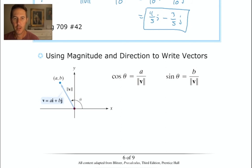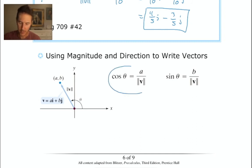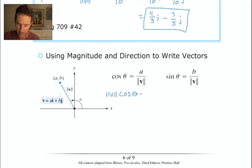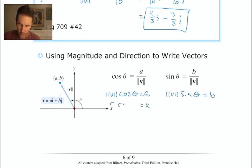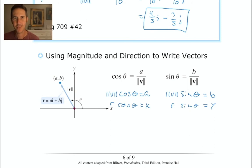Now let's get more specific about direction. If a vector points into the second quadrant, the theta value is larger than π/2. We use the relationships: ||V||·cos θ = a and ||V||·sin θ = b — this is just like x = r·cos θ and y = r·sin θ from polar coordinates. This is not new material — it's the same idea presented in a different context.